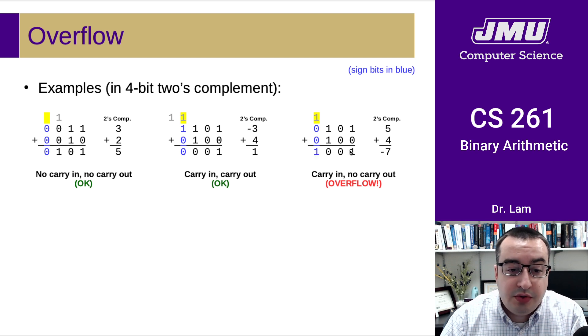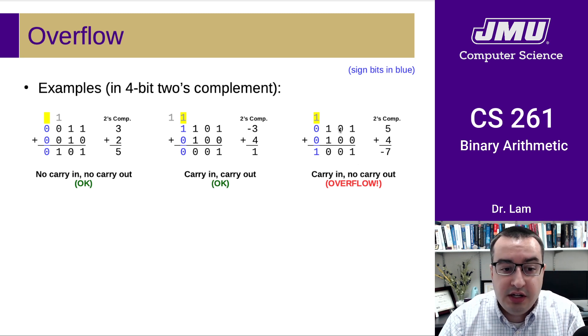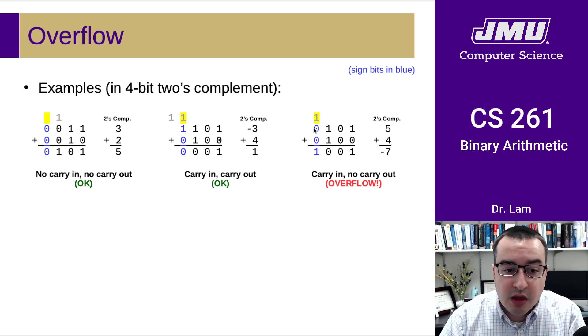So you'll notice that if we were interpreting this as an unsigned integer, this would be fine, right? Because we'd have five plus four. And this is the binary representation of nine. So if this were an unsigned integer, we would not have had overflow here because we did not have a carry out of the most significant bit. However, because this is two's complement,